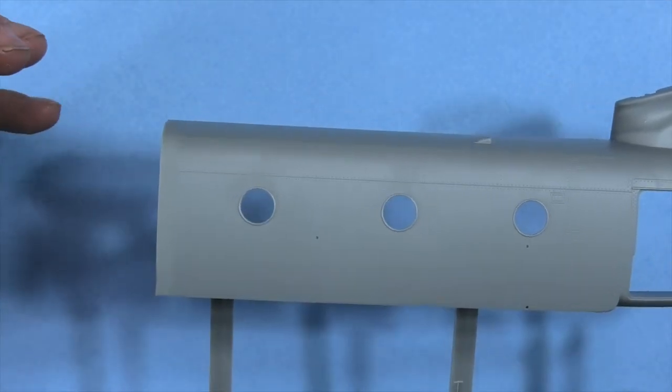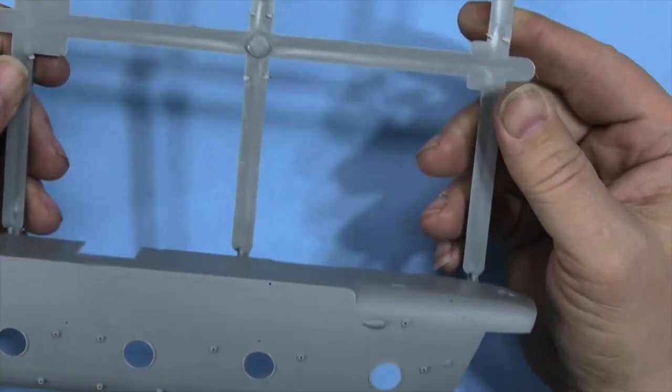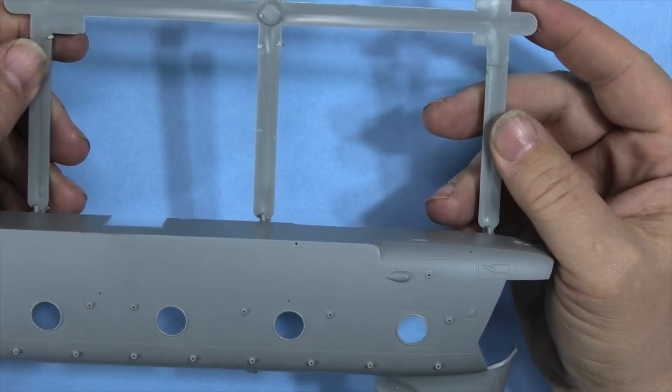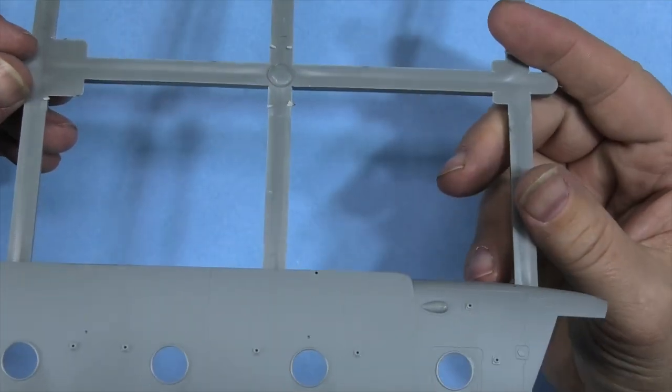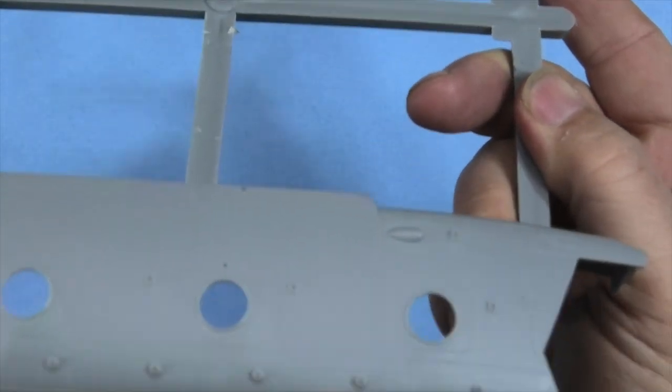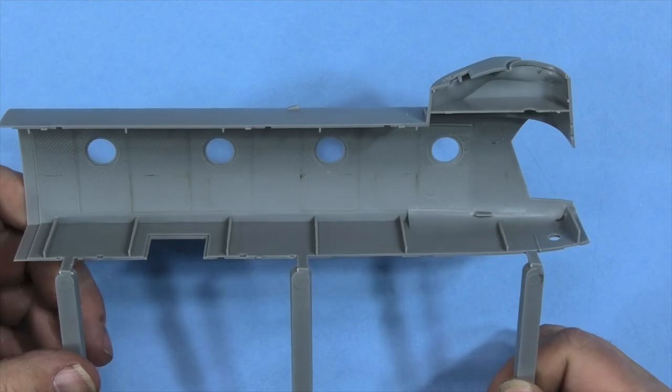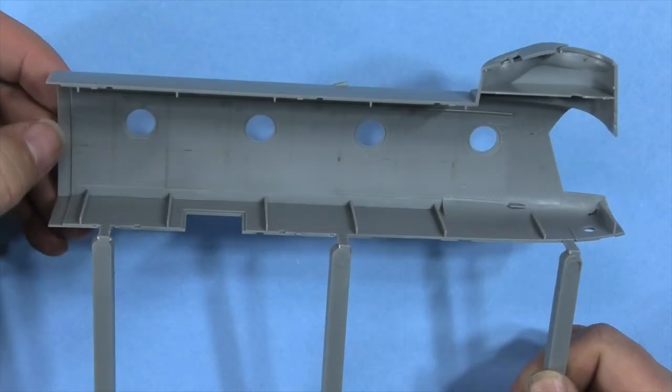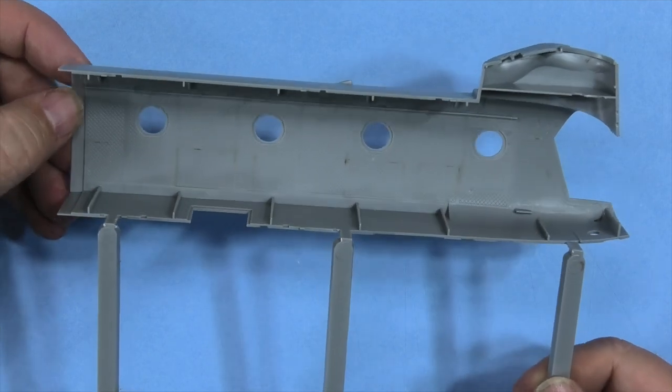You can tell there are going to be different versions because the other end of it is separate. There you go, new pour holes. It's got a lot of, I'm not sure what these are for, but they're there.